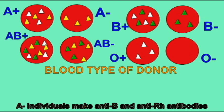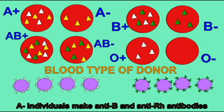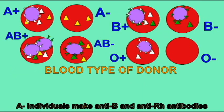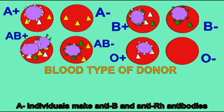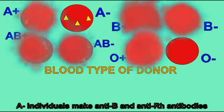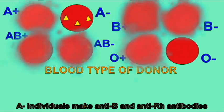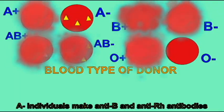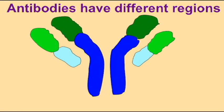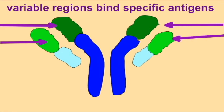Many of the proteins on cell surfaces help to identify cells. For example, the ability of immune cells to distinguish between blood types depends on the sugars attached to a protein known as the H antigen.